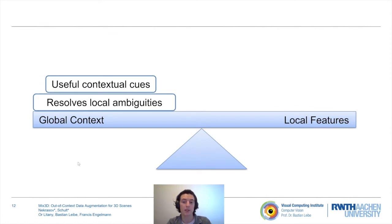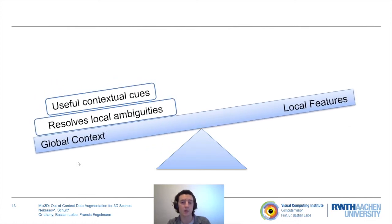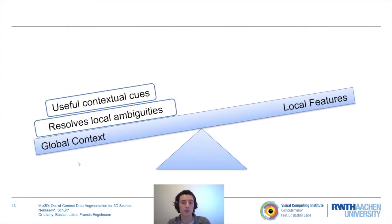However, relying too heavily on global scene priors can be harmful. Models may overfit to contextual cues of the training set, resulting in poor generalization to unseen data. Local structures, in contrast, are invariant to the context and could be used better to reason about the semantics.